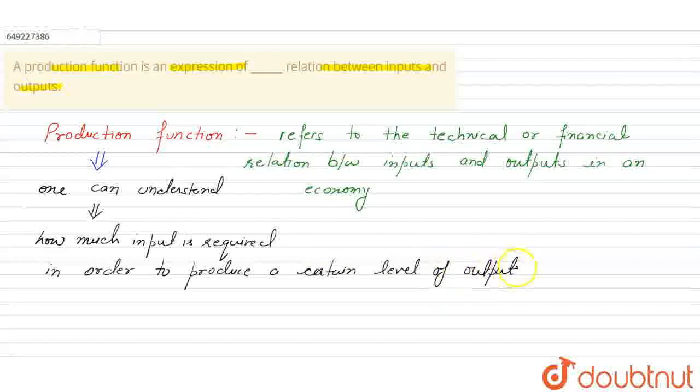So basically, production function is a technical relation between input and output. So the answer will be: production function is an expression of technical or financial relation between input and output. Alright, this will be the complete answer. I hope this is clear. Thank you.